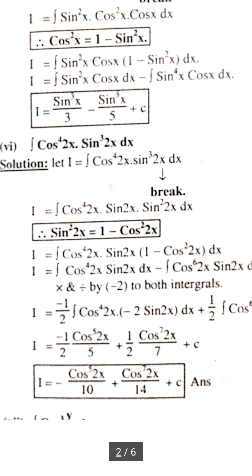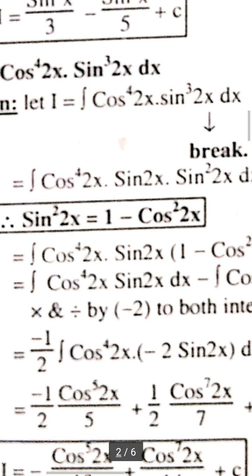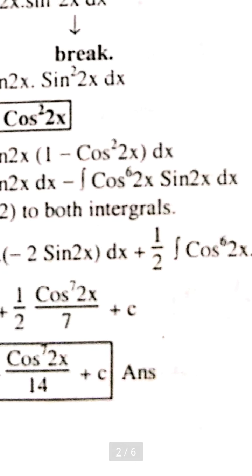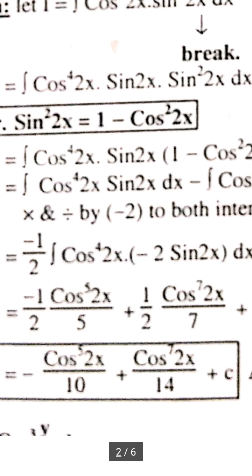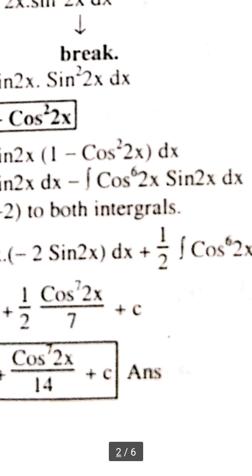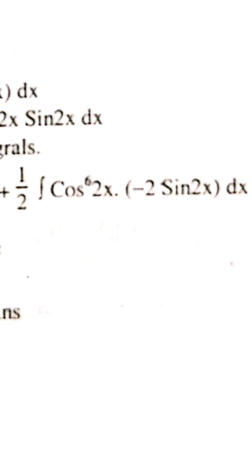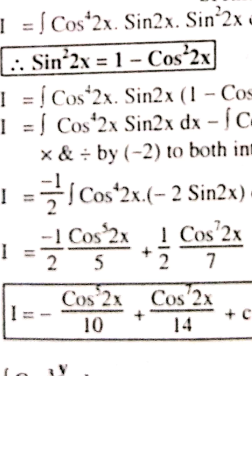Number 6: integration of cos⁴(2x) · sin³(2x) dx. We break sin³(2x) as sin²(2x) · sin(2x), and apply the identity sin²(2x) = 1 − cos²(2x). Let u = cos(2x), so du = −2sin(2x)dx. After substitution and cancellation, the answer is −cos⁵(2x)/10 + cos⁷(2x)/14 + C.